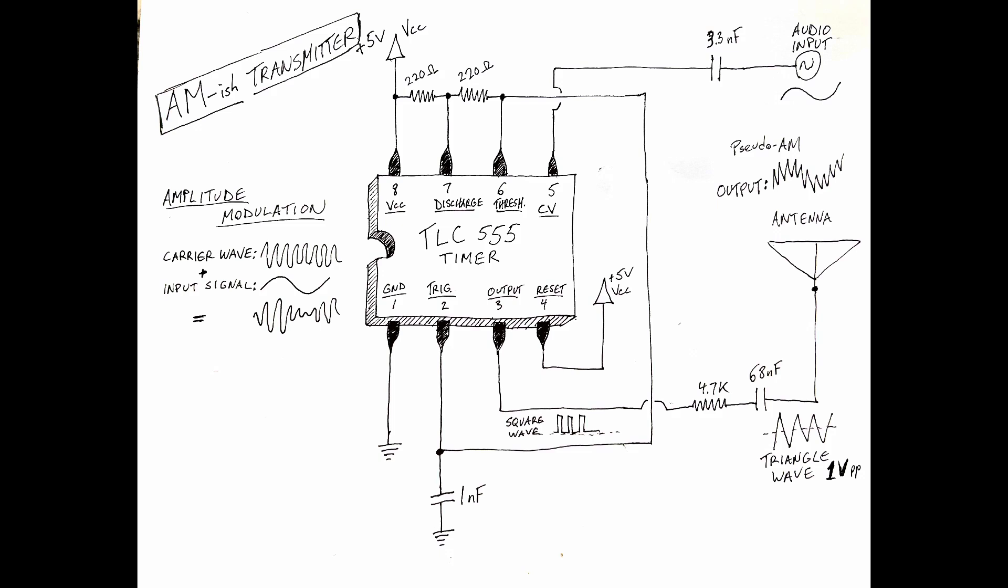So using a 555 timer configured in a standard way as an astable multivibrator, I used two 220-ohm resistors and one nanofarad capacitor to generate a carrier frequency, which was a square wave of 650-ish kilohertz.